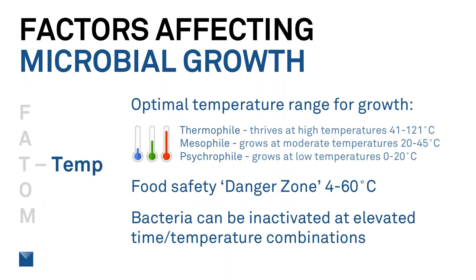Next is temperature. There are three different temperature ranges for growth. We have the thermophile, which thrives at high temperatures like hot springs. We have the mesophile, which is at more moderate temperatures, around body temperature — the most common zone for microbial growth. And we have the psychrophile, which is at low temperatures, like refrigeration. Listeria, as an example, can grow in anaerobic refrigerated conditions. That's why we have the food safety danger zone between 4°C and 60°C (about 40 to 140°F). Bacteria can be inactivated at elevated time-temperature combinations, such as with retort.